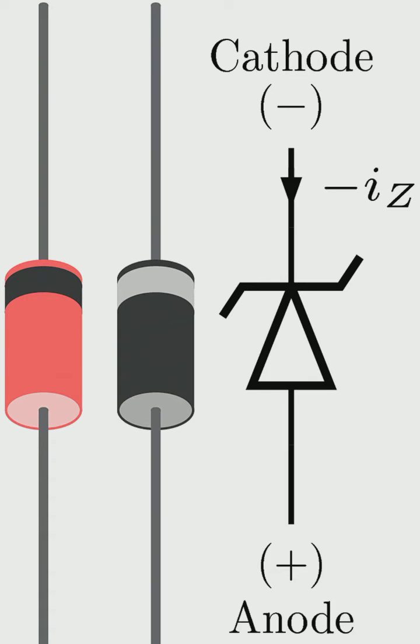When it conducts current in reverse bias, it means it conducts current from cathode to anode, and that's why this arrow shows that. That current is indicated by iz, the Zener current, and it has a negative sign showing the current will flow from cathode to anode.